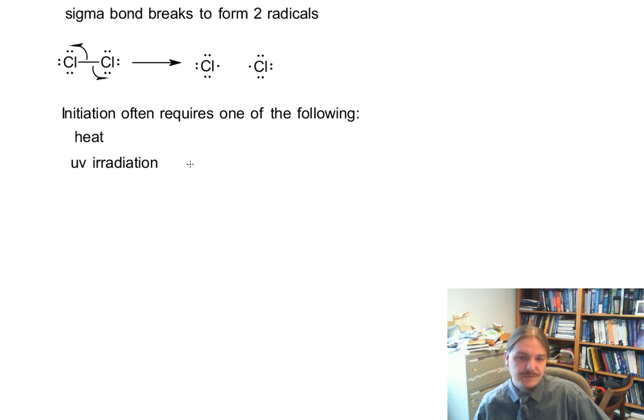And UV irradiation is often known as H nu, and the Greek letter nu looks like the English letter V, where this comes from that general chemistry equation, E equals H nu for the energy of a photon. So this is our shorthand for UV irradiation.